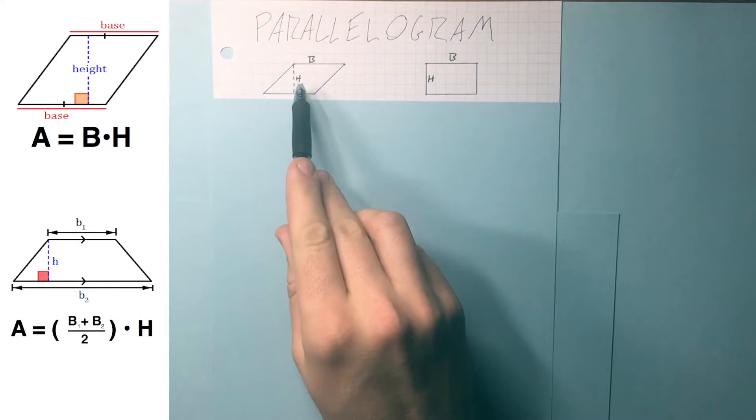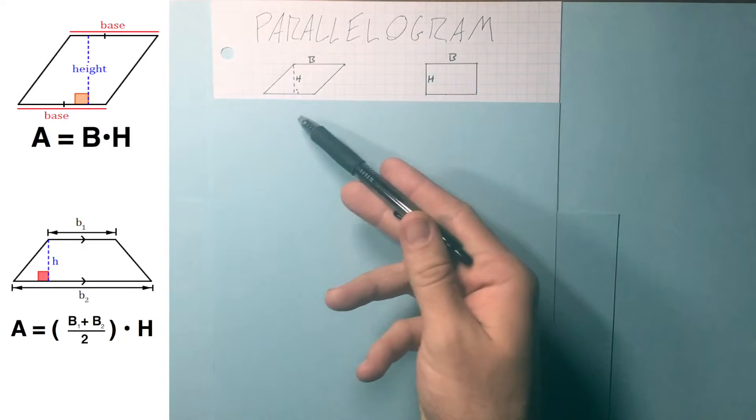So for a parallelogram, it's base times height, and just like a rectangle, why is it the same as a rectangle?